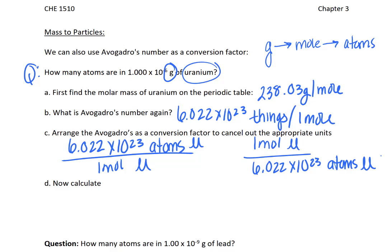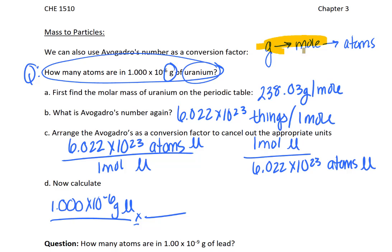So, the question up here said we're starting with 1.000 times 10 to the negative 6 grams of uranium. So, first thing, we want to convert from grams to moles. In order to do that, we need the molar mass. The molar mass is 238.03 grams in one mole. Because we have grams here, we need the 238.03 grams on the bottom of the next term so that they cancel out. So, now we have one mole of uranium on top.